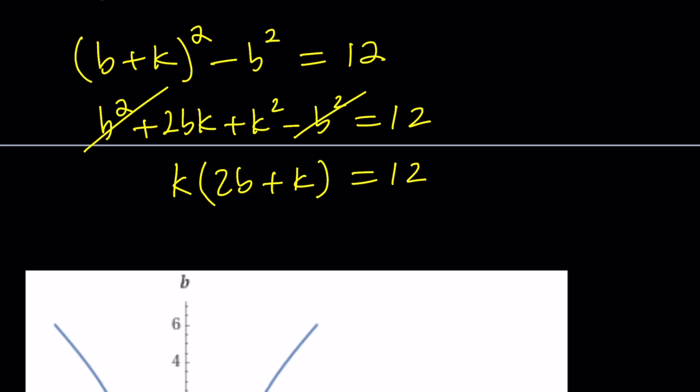Now we have this expression factored. You can go ahead and stick to this, like k(2b + k) = 12. But one of the things you need to be careful about is, when you factor 12, let's say you go with 1 and 12. Since k is 1, this is going to be an odd number, but 2b is always even, and 12 is even.